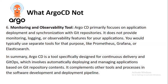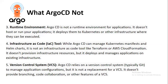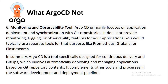In summary, Argo CD is a tool specifically designed for continuous delivery and GitOps, which involves automatically deploying and managing applications based on Git repository contents. It complements other tools and processes in the software development and deployment pipeline. So to recap: Argo CD is not a programming language, not a development framework, not a runtime environment, not an infrastructure as code tool, not a version control system, and not a monitoring tool.